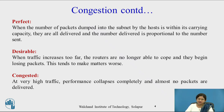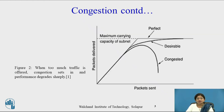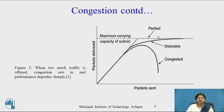Now look at the congested condition. At very high traffic, performance collapses completely and almost no packets are delivered — that condition is known as the congested condition. As shown in the third graph, it completely collapses, meaning not a single packet is delivered to the destination.